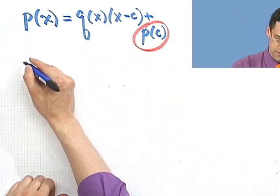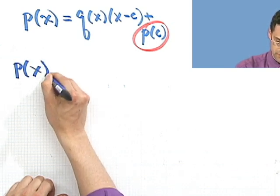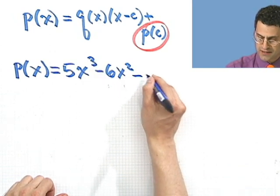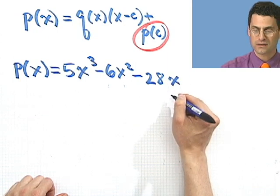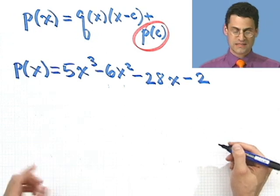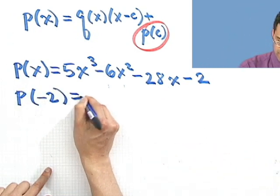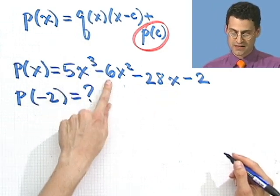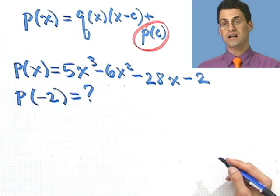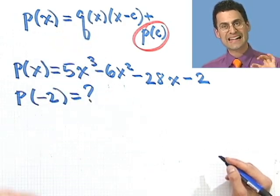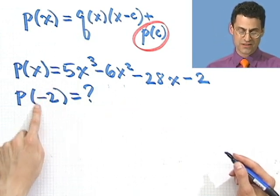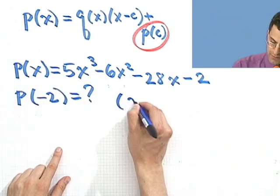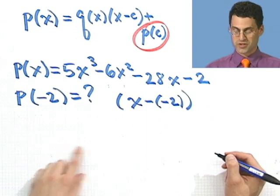Let me show you this with an example. Suppose that p of x equals 5x cubed minus 6x squared minus 28x minus 2. And suppose someone asks us, what is p evaluated at negative 2? So just plug in negative 2 here. Well, you could just do that — negative 2 cubed times 5, minus 6 times negative 2 squared, minus 28 times negative 2, minus 2. And you can actually compute that. But let me show you another way of computing that exact same number.